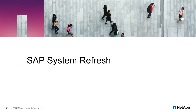Within the solution overview and also within the disaster recovery section, Bernd talked about several use cases and scenarios like logical corruption or DR testing where existing snapshot backups are used as a basis for the provisioning of a new SAP system. Within this section, I want to talk about another use case: the SAP System Refresh. In most cases, the SAP System Refresh operation is executed to load data from the production system into a test or QA system.